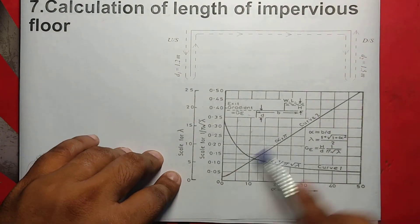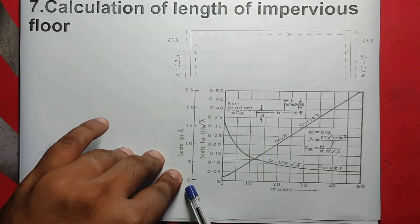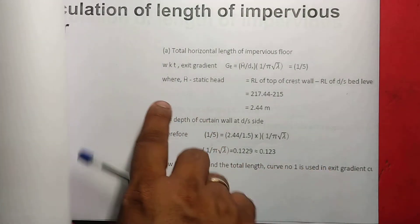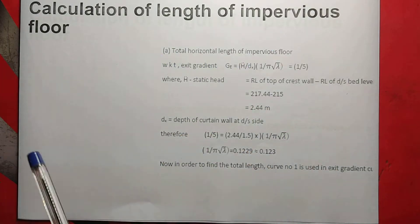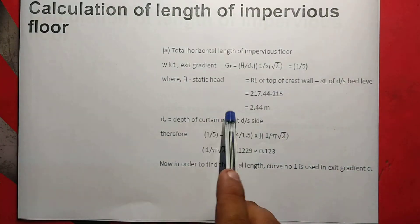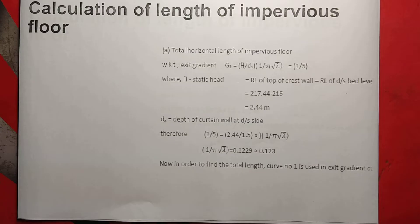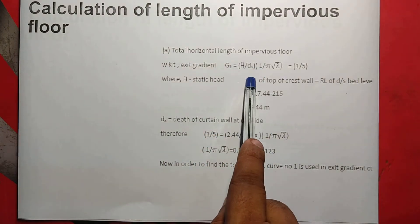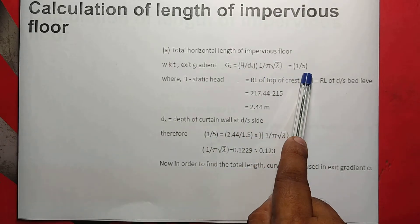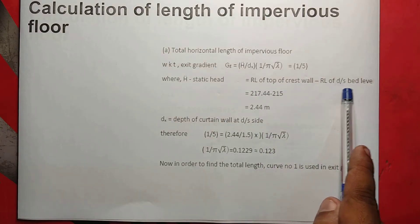We have two curves: curve 2 and curve 1. The y-axis has two scales. We have the total horizontal length of the impervious floor. The exit gradient GE is equal to h divided by d, into 1 divided by π√λ. Here h is h-double-dot. Starting head h-double-dot is the RL of top of crest wall minus RL of downstream bed level.